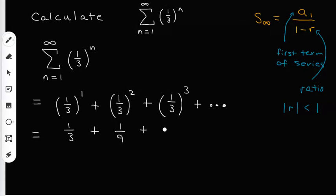And then one-third cubed, which is going to give you one over 27, where 27 is three cubed. And then I'll put my dot, dot, dot again.